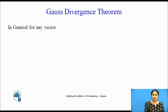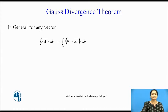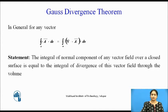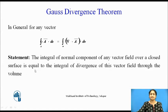For any vector, what is the Divergence Theorem statement? It is a closed integral over the surface: for any vector A-bar, the surface integral of A-bar · ds is equal to the integral over the volume of del dot A-bar dv. This states that the integral of the normal component of any vector over a closed surface is equal to the integral of the divergence of this vector through the volume.